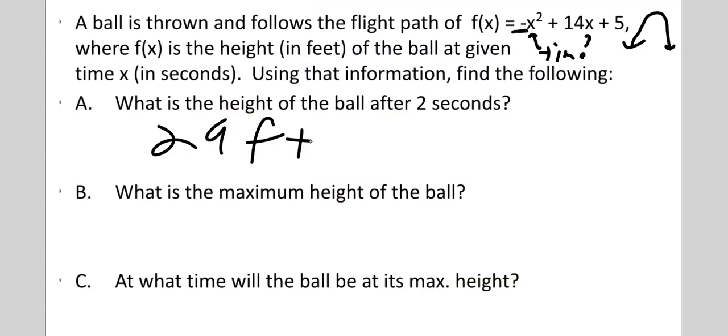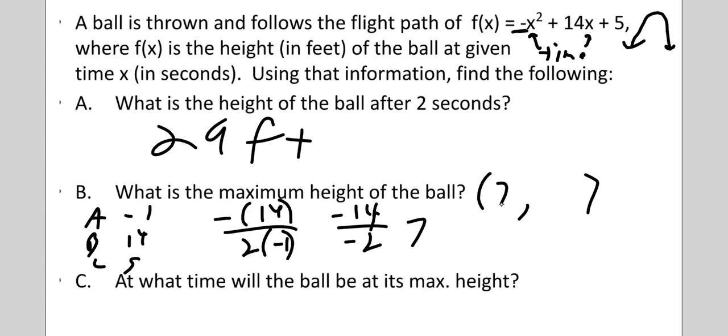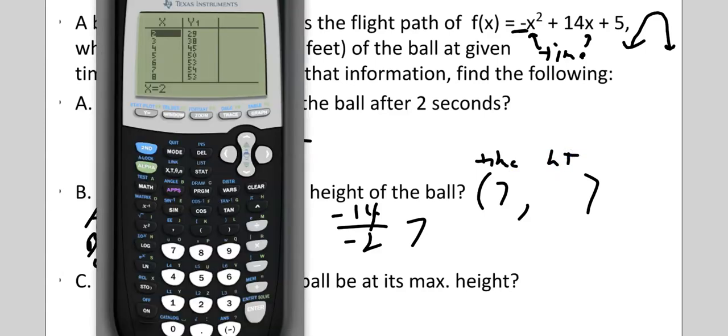What is the maximum height of the ball? Well, A, B, C, negative 1, 14, 5. So, opposite of B over 2A. So, opposite of B over 2 times A. So, the opposite of 14 is negative 14. 2 times negative 1 is negative 2. And that gives me 7. Now, this is not the height. Remember, this is the x-coordinate. The height, this is time. And this is height. So, I need to go to my calculator and look and see where is it at 7 seconds, 54 feet.